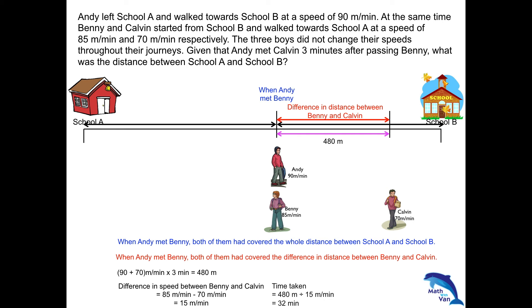We can take the combined speed of Andy and Benny and multiply by 32. That gives us the distance between school A and school B. Alternatively, you can use the point when Andy met Calvin to verify — that's 3 minutes later, which is 35 minutes. Take the combined speed of Andy and Calvin and multiply by 35. That gives the same answer: 5,600 metres.